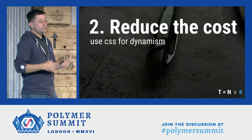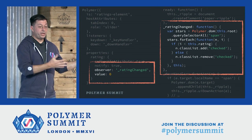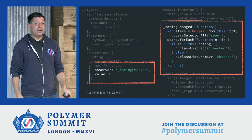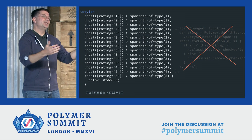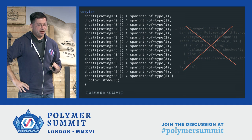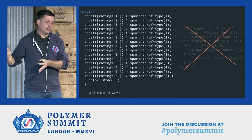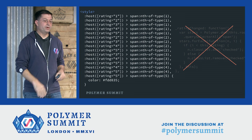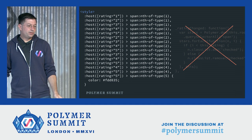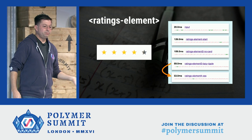The next technique is using CSS more for dynamism. We had an observer for when the rating property changed, and we were using JavaScript to imperatively set CSS classes on the elements. It turns out we don't need to do this at all. We can use CSS instead — specifically, using the fact that we reflected the rating attribute to the host, and using an nth-of-type selector to conditionally style the appropriate star according to that rating. This was just enough to get rid of the observer completely, letting the platform do the heavy lifting. Using CSS for dynamism and writing less code gives us a nice improvement.